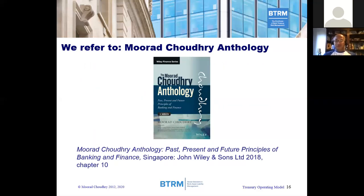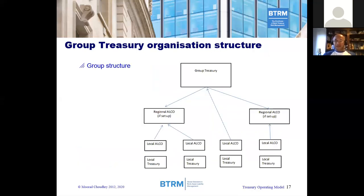The other textbook I want to refer to with respect to the treasury operating model is Moorad Choudhry's anthology, published six years later. We're going to reference chapter 10 from that book, and the following slides are extracts from that chapter. The key point here is: what should be the operating model for a group entity where you have multiple legal subsidiaries, multiple currencies, and multiple national jurisdictions operating with different regulatory authorities as responsible supervisors? What is the most appropriate operating model for a group entity with respect to the group treasury function?